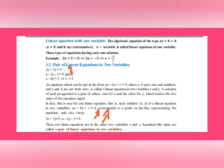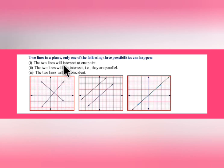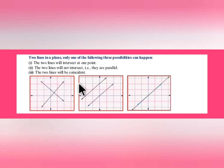These two linear equations in the same two variables x and y are called a pair of linear equations in two variables. When two lines are in a plane, one of three possibilities can happen: the two lines intersect at one point, they are parallel to each other and do not intersect, or the two lines coincide — they are coincident.